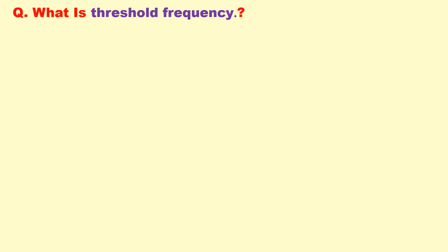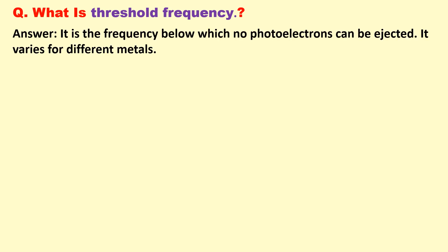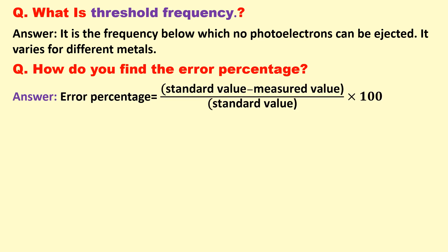What is the threshold frequency? It is the frequency below which no photoelectrons are ejected. It varies for different metals because the work function is different for different metals. How do you find the error percentage? The error percentage is standard value minus measured value divided by standard value into 100.